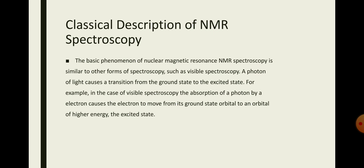The basic phenomena of nuclear magnetic resonance spectroscopy is similar to other forms of spectroscopy. A photon of light causes a transition from the ground state to the excited state. Atomic nuclei with even numbers of protons and neutrons have zero spin, and all others with odd numbers have non-zero spin.